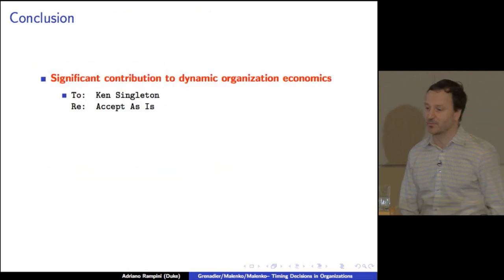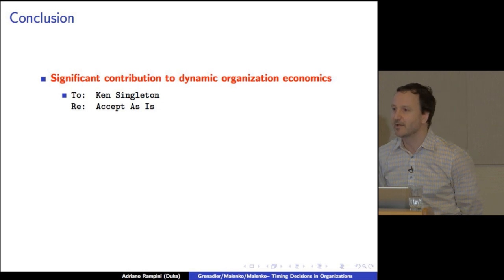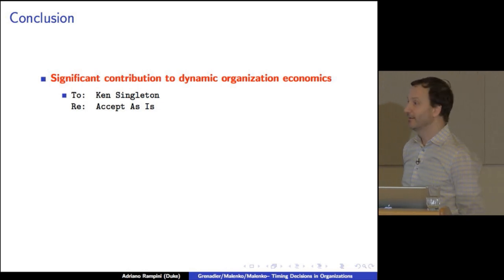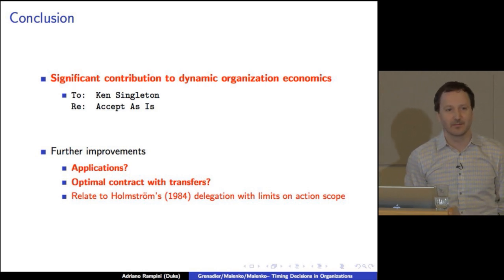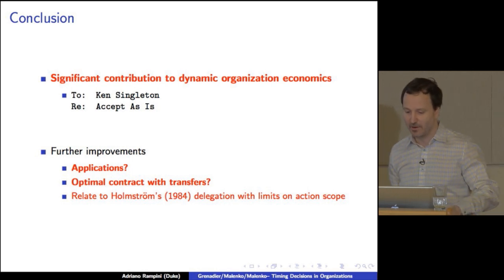So here's my short version. It's a significant contribution to dynamic organization economics. Here's my little note to Ken Singleton. Accepted as is. Where is Ken? If you press me for what else would I like to see, I would like to see a little more discussion of applications. I would like to see the optimal contract with transfers. And I would like to see the relation to Holmstrom's 1984 delegation which limits the scope of the action. Thank you very much.